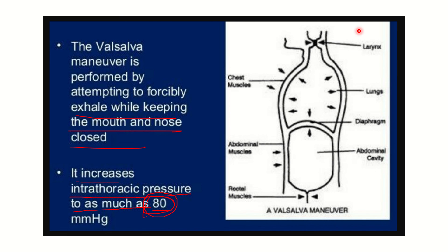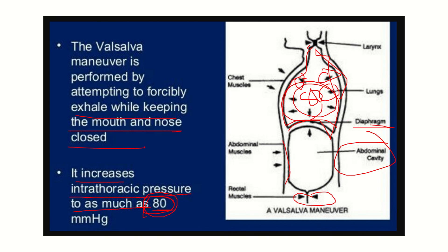In the diagram we can see the larynx is closed, chest muscles are just outside the parietal pleura, and the lungs are represented in the functional diagram. The diaphragm and abdominal cavity are shown below, with abdominal and rectus muscles in front. In the thorax, pressure increases and reaches up to positive 80 mmHg. Normally intrapleural pressure is minus 4 at expiration and minus 7 at inspiration, but in the Valsalva maneuver, intrapleural pressure increases and becomes positive.